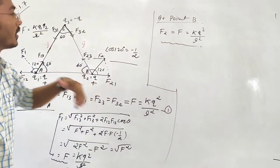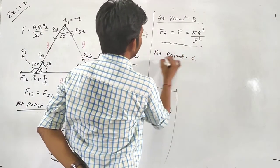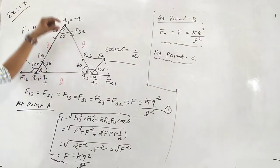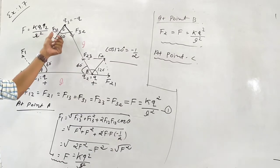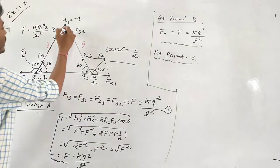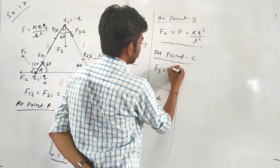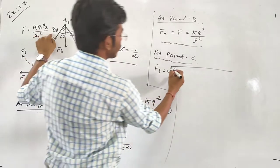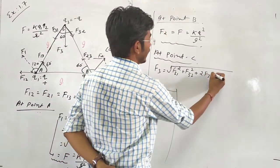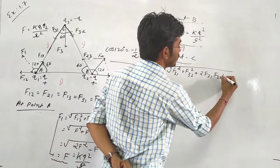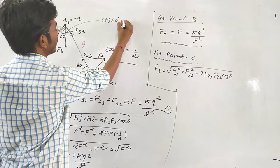For the third case — the force on point C — from the figure the angle between the two forces F31 and F32 is 60 degrees. The resultant F3 is found using: F3 equals the square root of F31 squared plus F32 squared plus 2 times F31 times F32 times cos theta, where theta equals cos 60 degrees which equals one half.